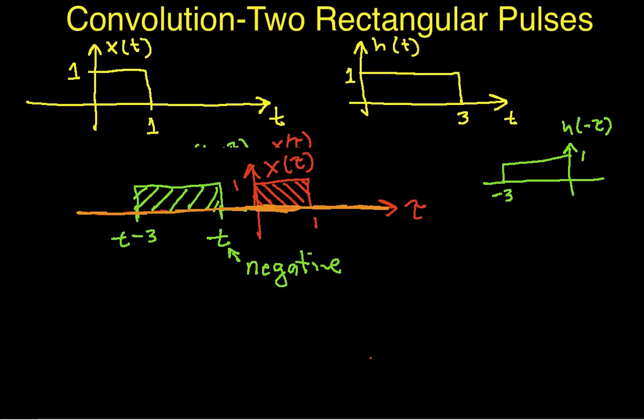Okay. And if I have a function that's zero everywhere, and I integrate it, then that integral is going to be zero. So what we've learned then is that if t is less than zero, the integral, which again represents the convolution, is also equal to zero. Okay. So that's a useful result. We've actually knocked off half the real line by looking at the case where t is negative.